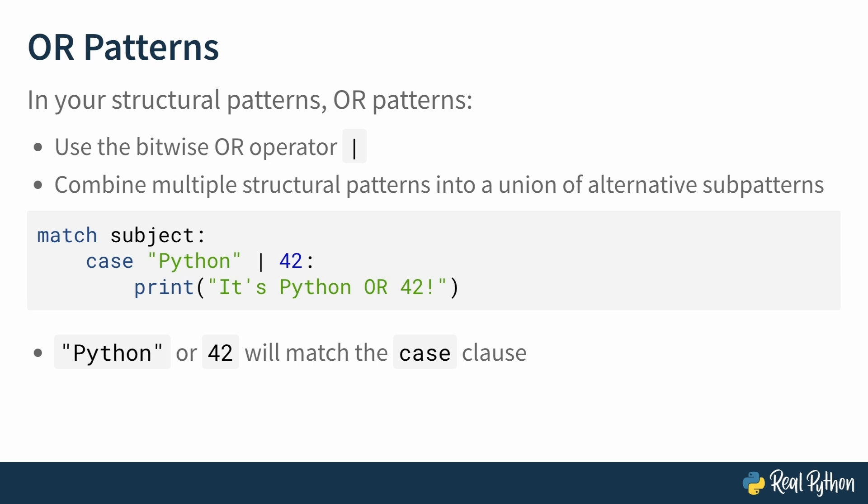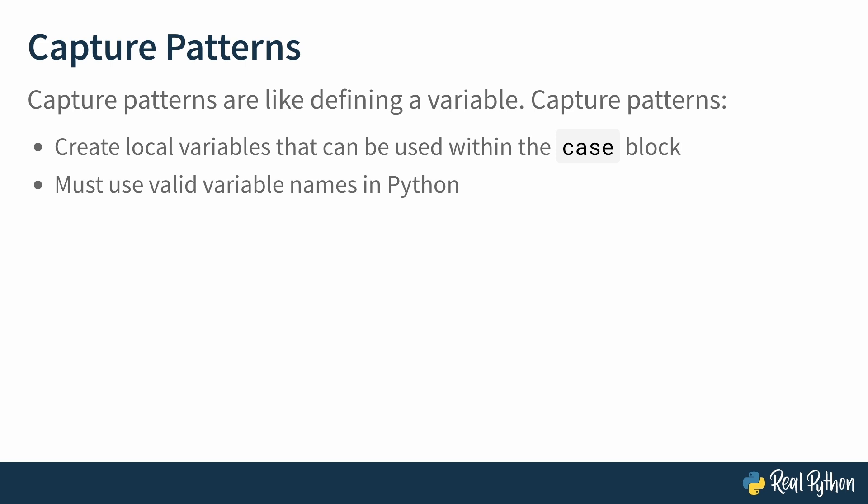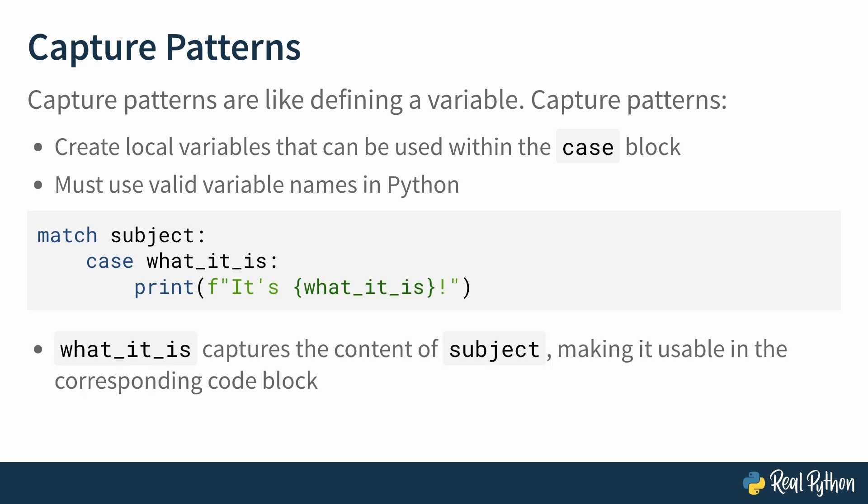Moving on to capture patterns. These are as interesting as they are powerful. Capture patterns are like defining a variable inside your case clause. Capture patterns create local variables that can be used within the case block. They must, however, use valid variable names in Python, just like any other variable declaration. For example, match subject, case, what it is, print an fstring, interpolating whatever what it is is into the string. So what it is, in this case, captures the content of subject, making it usable in the corresponding code block. But be careful, because when used without a guard, this matches to any subject unconditionally. Probably not what you want to do.